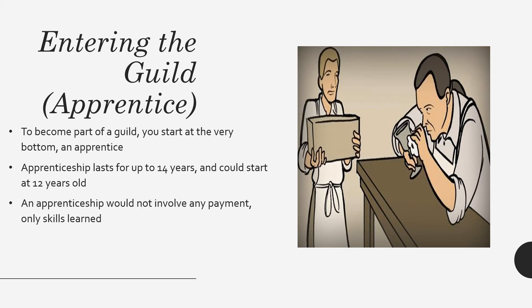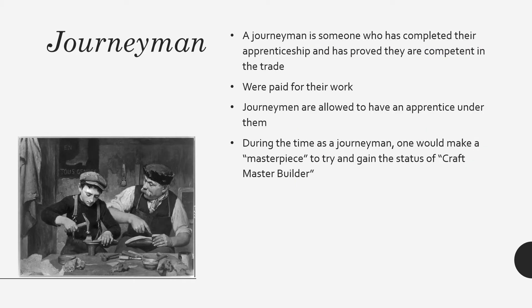Once their apprenticeship ends, they become a journeyman — someone who has completed their apprenticeship and proved they are competent in the trade. Now they are actually able to get paid. Journeymen are also allowed to take on an apprentice under them, so right after completing your apprenticeship you can take an apprentice and have them do all the hard labor you did before.